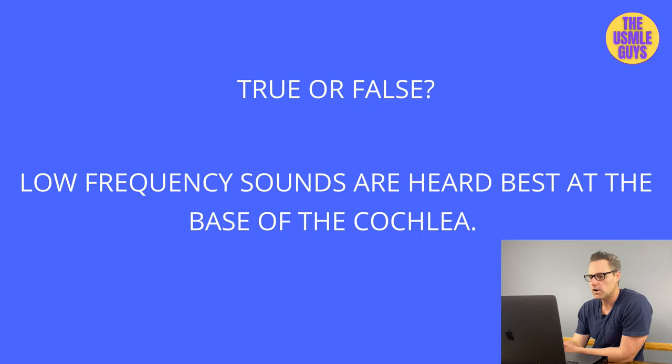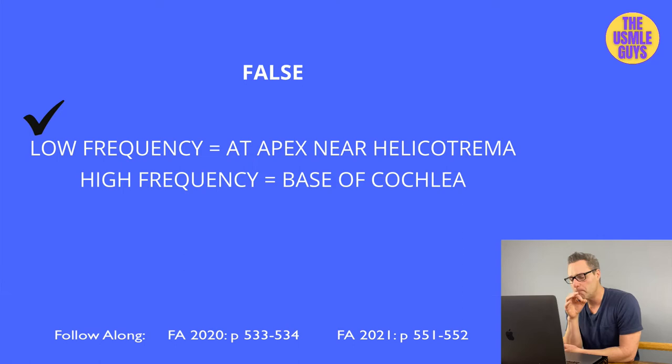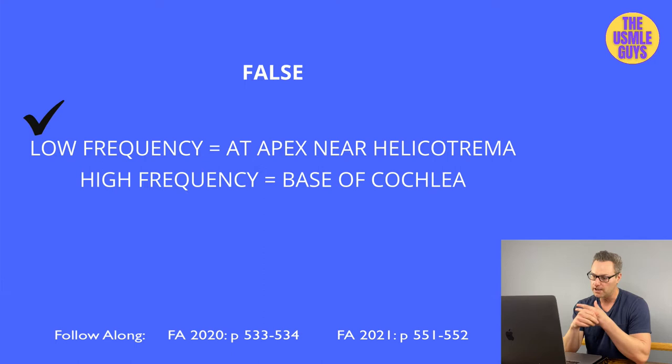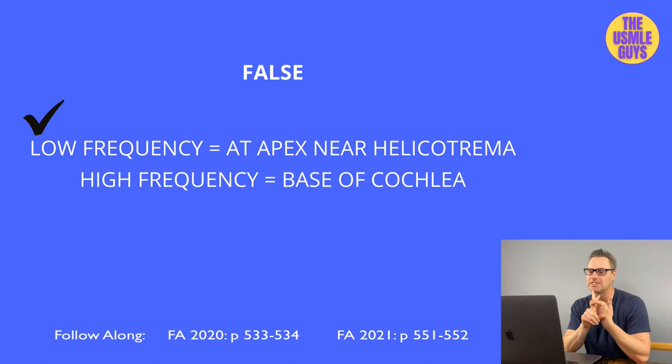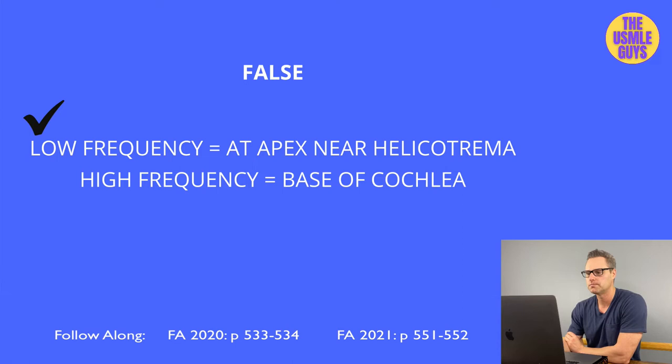This is false. In the inner ear, we have a snail-shaped fluid-filled cochlea with a basilar membrane that vibrates when hit by sound waves. Those vibrations are transduced by hair cells, stimulating a nerve signal to the brain stem. Lower frequency waves are perceived best at the apex near the helicotrema; higher frequency waves are best heard at the base of the cochlea.